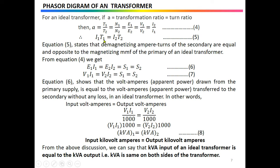From this equation, I1·T1 represents the magnetizing MMF (magnetomotive force) of the primary, while I2·T2 represents the demagnetizing ampere-turns of the secondary. These are equal and opposite for an ideal transformer. Using this relation again, we can write E1·I1 = E2·I2, which represents power, so V1·I1 = V2·I2 — the power on the primary equals the power on the secondary.